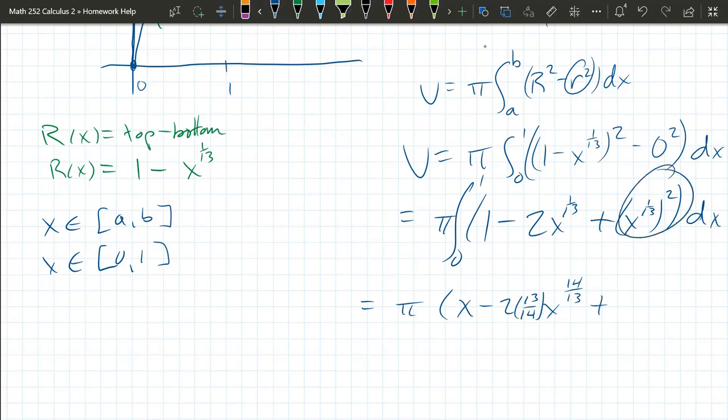So this is x to the 2/13ths. You add one to that 2/13ths. So you got 13/13ths to 2/13ths. And you get 15/13ths. times the reciprocal 13/15ths going 0 to 1.